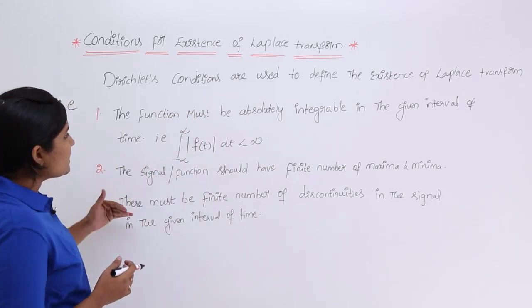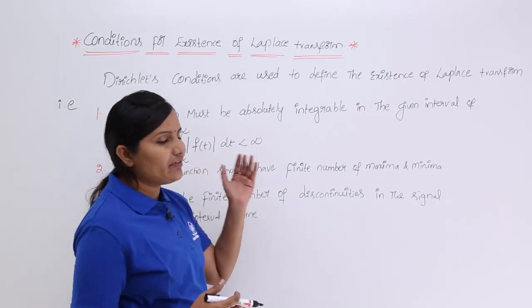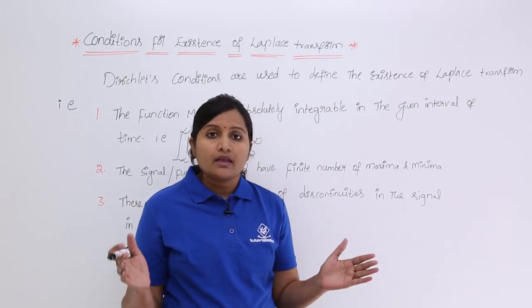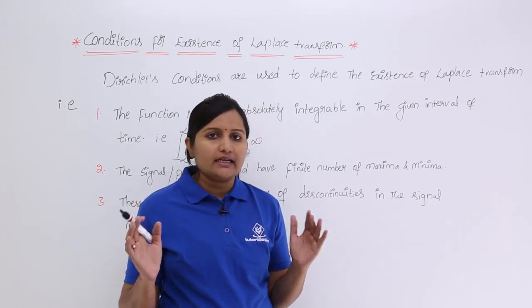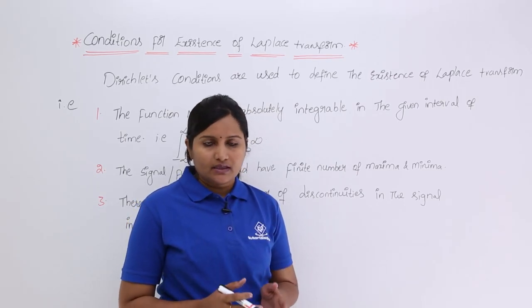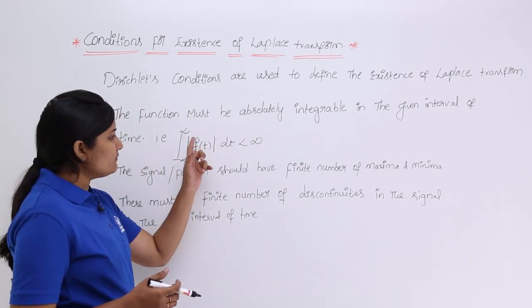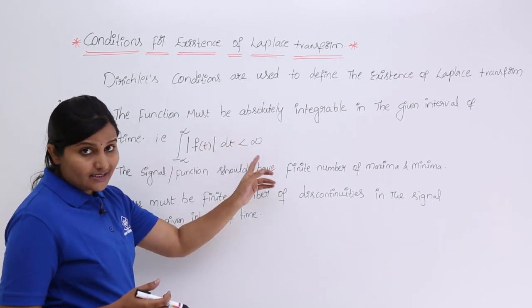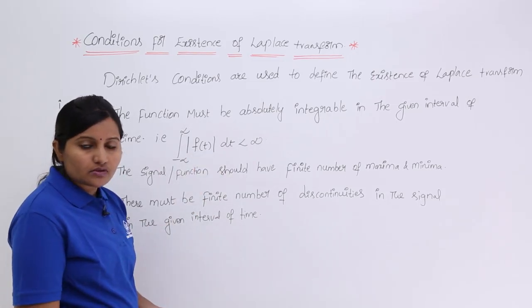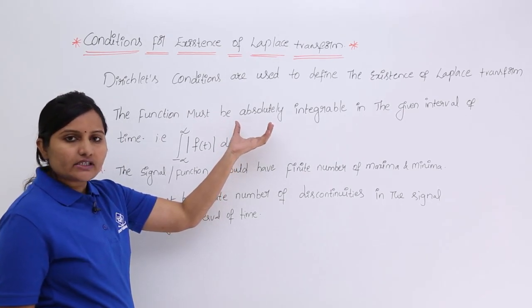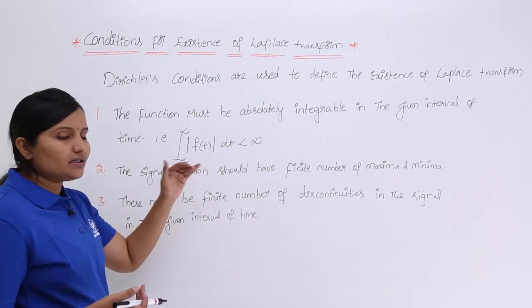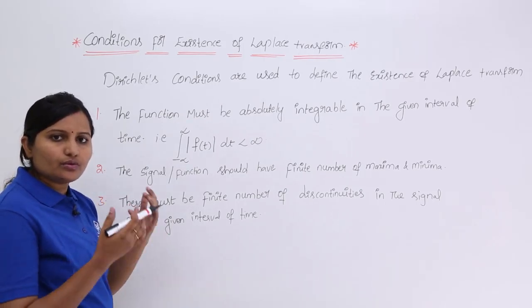The first condition is that the signal must be absolutely integrable in the given interval of time — that means from where to where we are calculating the signal, in that interval the signal must be absolutely integrable. Formally, the integral from minus infinity to infinity of |f(t)| dt must be less than infinity, meaning you need to get a finite value. If you get an infinite value, the signal violates the first Dirichlet condition and cannot be represented in the frequency domain using Laplace transform.